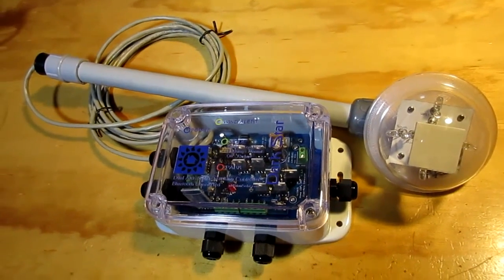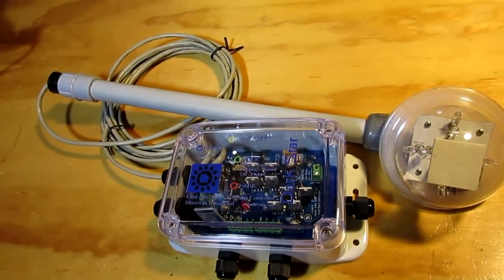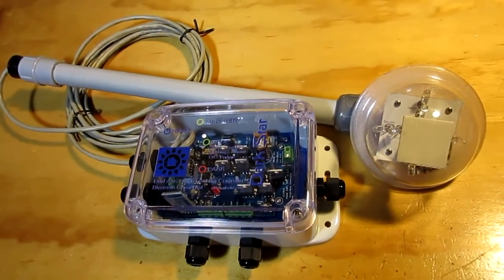This is the Darkstar 2.0 dual-axis solar tracking controller with Bluetooth remote.